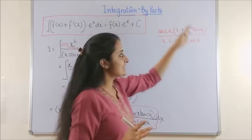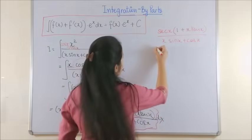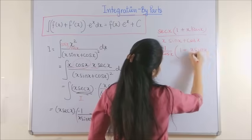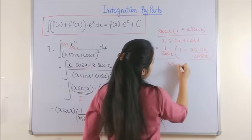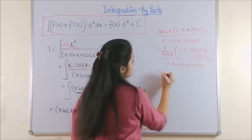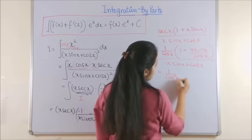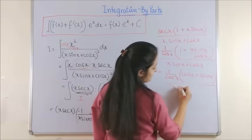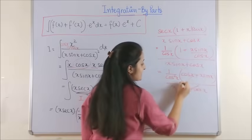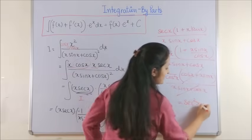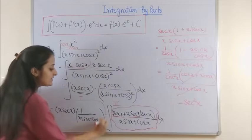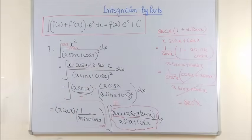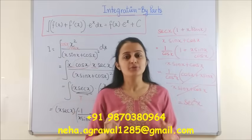Now reduce sec x: this is 1/cos x times (1 + x·sin x/cos x) all over (x·sin x + cos x). This gives 1/cos²x into (cos x + x·sin x) all over (x·sin x + cos x). That term cancels and you're only left with sec x. So the final answer is the entire preceding term plus the integral of sec x, which is ln|sec x + tan x|, plus C. This is the end of integration by parts — do try out many more questions and share your feedback with me.